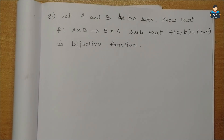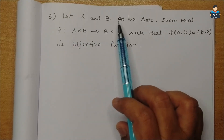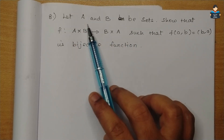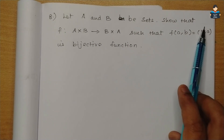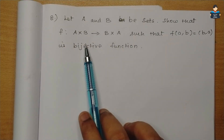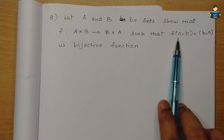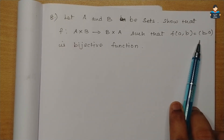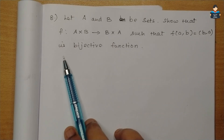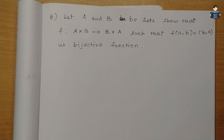Hello everyone, welcome to the channel. In this video, we will do Class 12 standard NCERT Math Chapter 1, Relations and Functions, Exercise 1.2, Question number 8. Let A and B be sets. The function f: A×B → B×A is defined such that f(a, b) = (b, a). We need to show this is a bijective function.